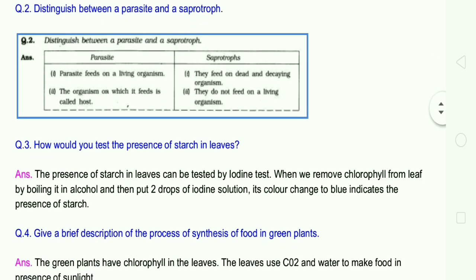Question number 3: How do you test the presence of starch in leaves? Answer: The presence of starch in leaves can be tested by iodine test. When we remove chlorophyll from leaves by boiling it in alcohol.